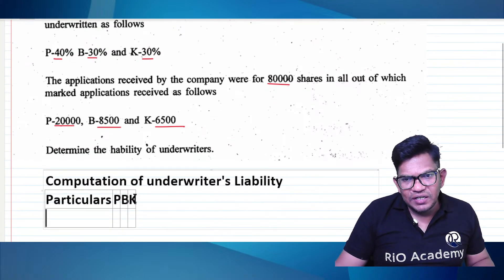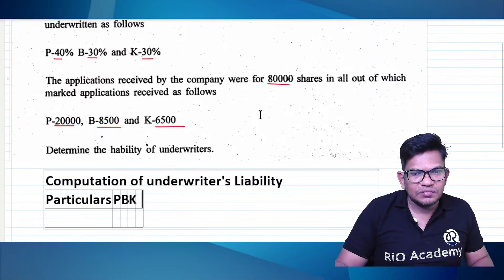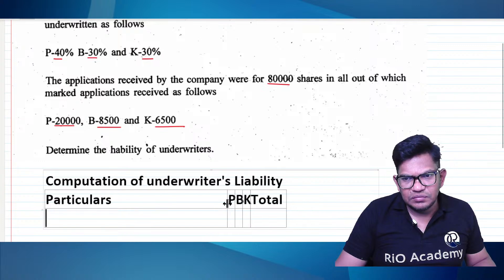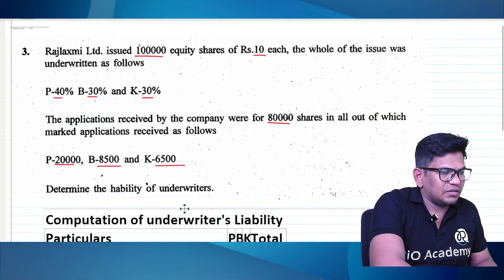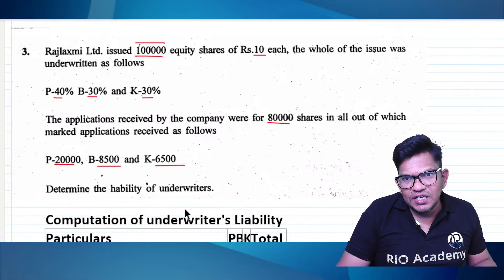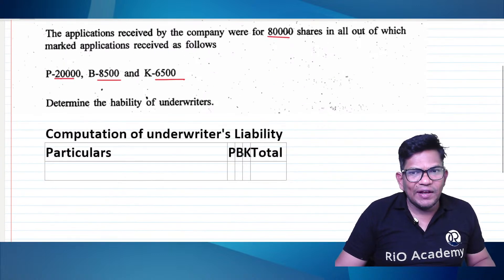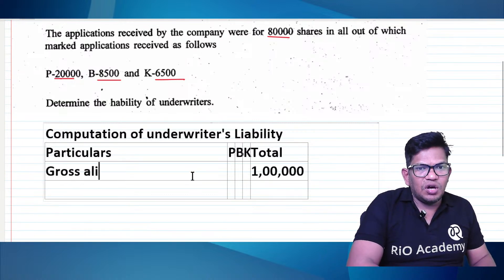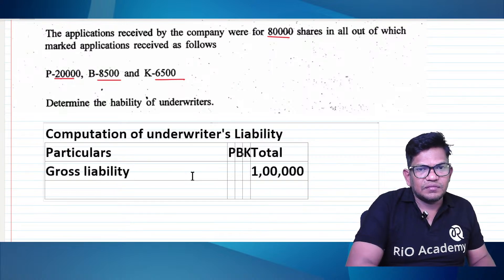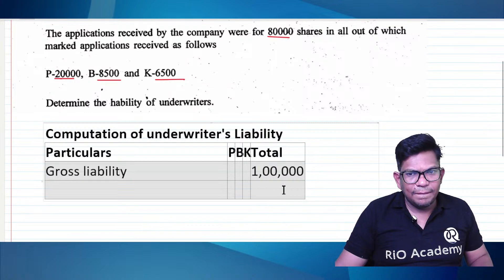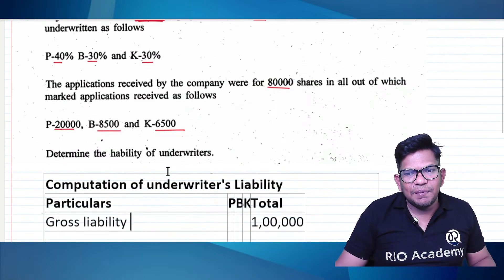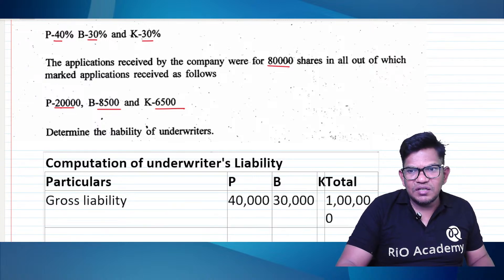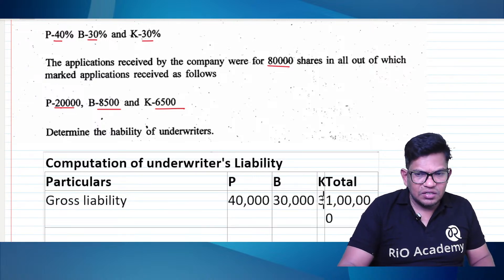Set up the table with columns for each underwriter. Raj Lakshmi: how many shares? K gets 40,000, P gets 30,000, and B gets 30,000.